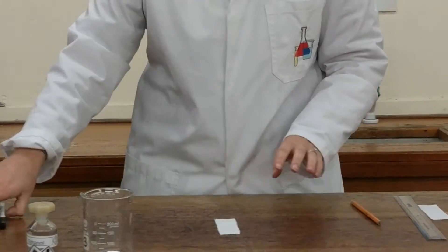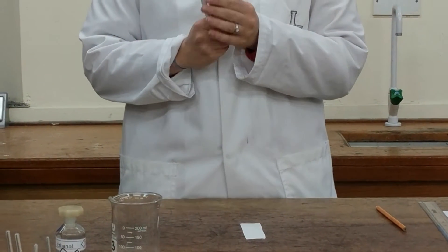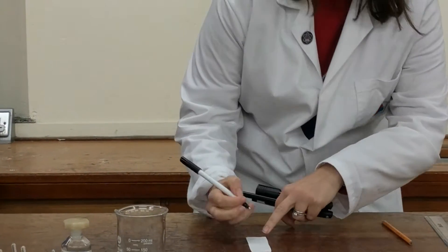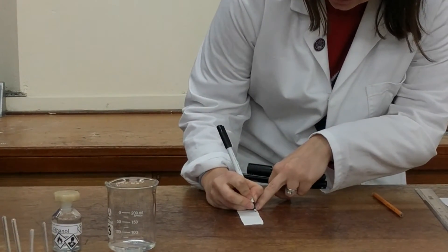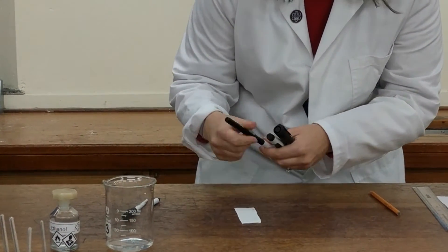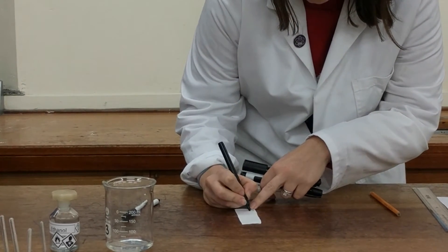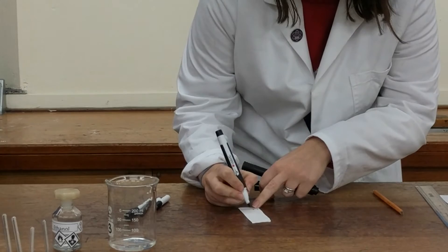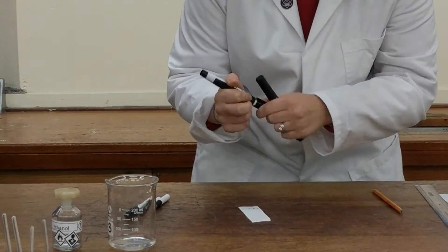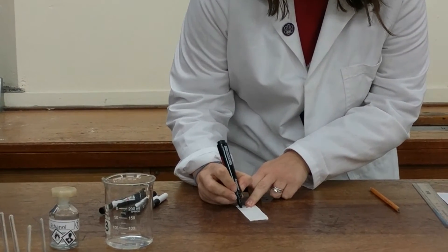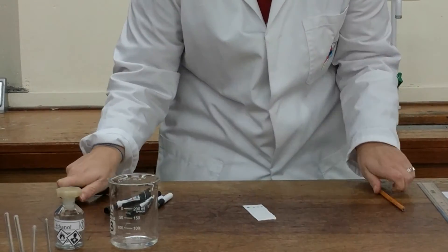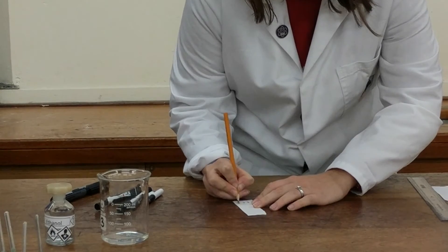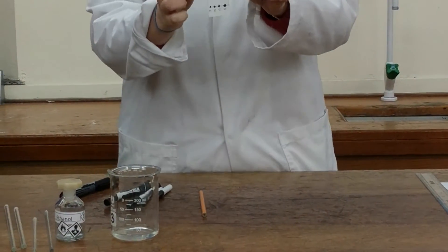On that line we're going to test four different black inks today. I'm just going to call them A, B, C, and D. So on the line you will put just a dot of each one, quite evenly spaced, otherwise they will merge into one another. And I will entitle them A, B, C, and D along the bottom.